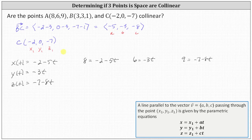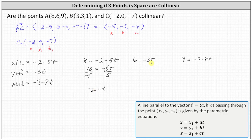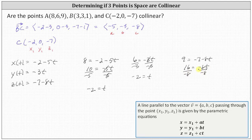Solving the first equation for t, we add two to both sides, giving us ten equals negative five t. Dividing both sides by negative five, we get t equals negative two. For the second equation, dividing both sides by negative three also gives t equals negative two. For the last equation, adding seven to both sides gives 16 equals negative eight t. Dividing both sides by negative eight, we again get t equals negative two.